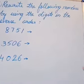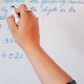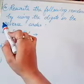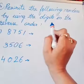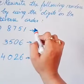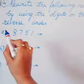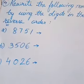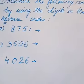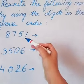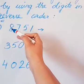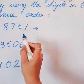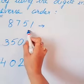Our next question is: rewrite the following numbers by using the digits in reverse order. Reverse here means to move backward. So what we have to do is use these digits only but in the reverse order.